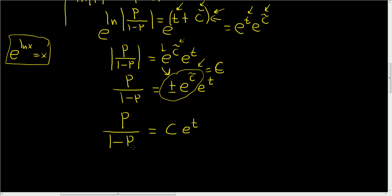So we have p over 1 minus p equals c e to the t. And now to solve for p, we will multiply both sides by 1 minus p. So 1 minus p, 1 minus p. These cancel. So you get p equals, I guess we can distribute here. So this times 1 is just that. And then this times this is simply this.